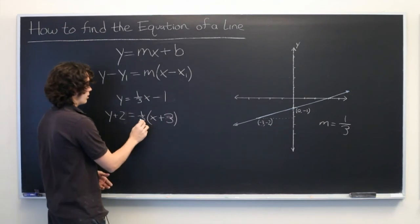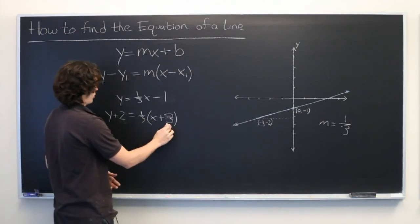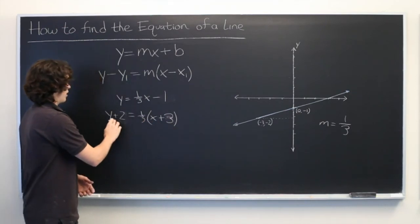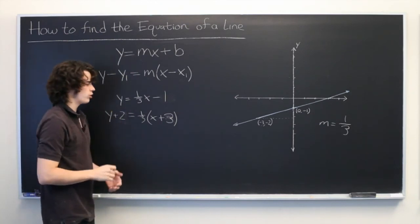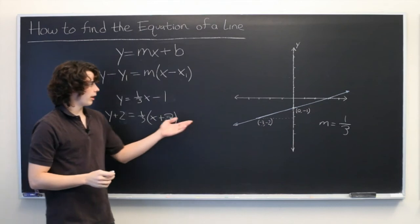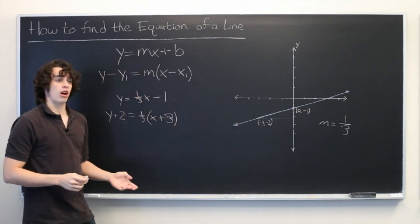Now, if you distribute the one-third through the parentheses and then subtract 2 from both sides, you should get this equation here. Which makes sense, because it's the same line, so the two equations describing it should be equivalent.